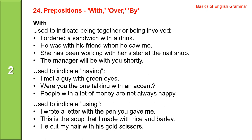First, with. With is used to indicate being together or being involved. I ordered a sandwich with a drink. He was with his friend when he saw me. She has been working with her sister at the nail shop. The manager will be with you shortly.